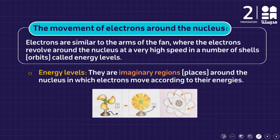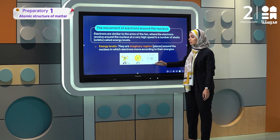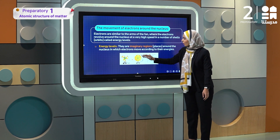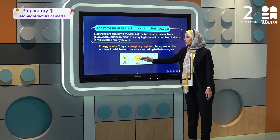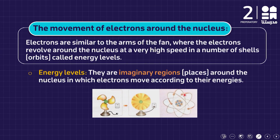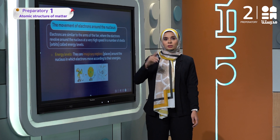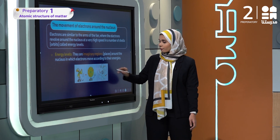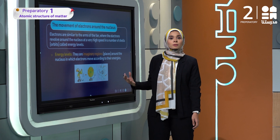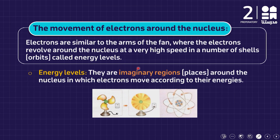The movement of electrons around the nucleus looks like the arms of the fan revolving around the center. Those energy levels or regions are imaginary — just to help us visualize the rotation of electrons around the nucleus. So, energy levels are imaginary regions — this is the key word of the definition.